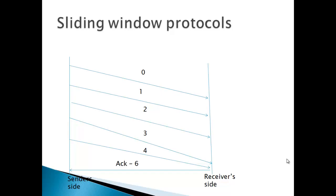Frames in the window are numbered from modulo n, that is from 0 to n minus 1. If n equals 6, frames are numbered from 0 to 5. So a maximum of n minus 1 frames may be sent before acknowledgement. The receiver receives an acknowledgement containing number 6 if 5 frames are sent — meaning it is understood that 5 frames have already been sent.